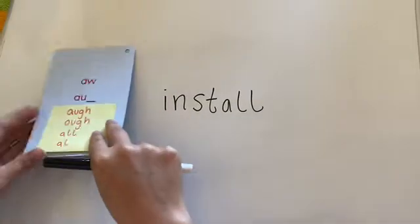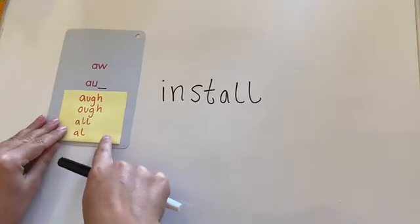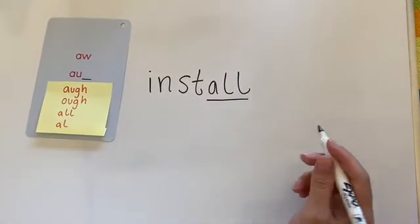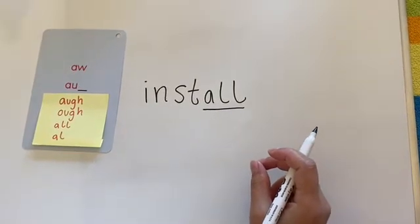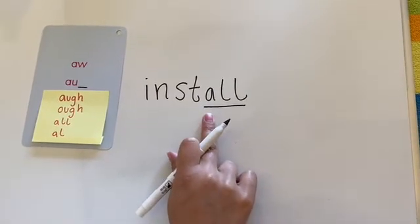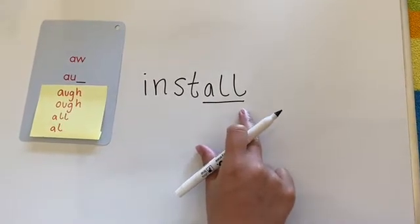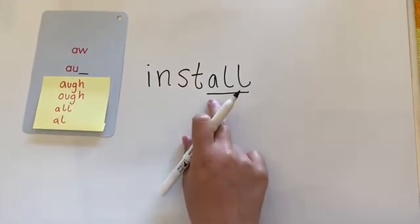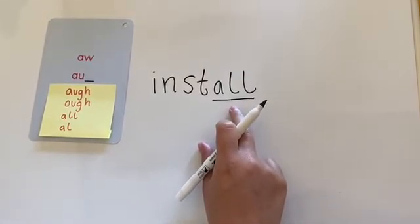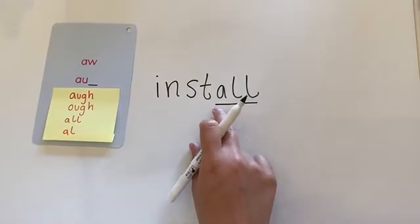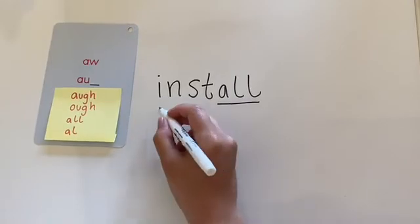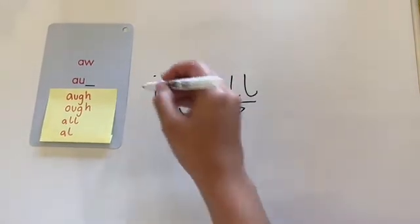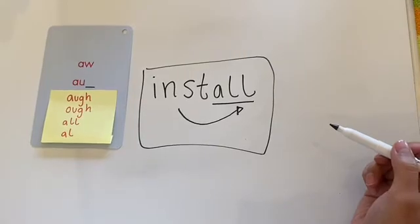Alright. Now we're going to find our spelling pattern. I see it's one of our unique spelling patterns — A-L-L. I know that this makes the aw sound. You might be a little curious about the L's — just know that the A makes the aw sound here because it is followed by the L's. When the A is in front of an L, it makes the aw sound. This makes aw. Now let's add the beginning sounds — install. We're still going to have that L sound at the end: install. Say it fast: install. My word is install.